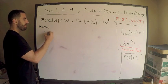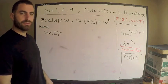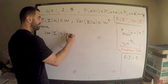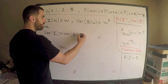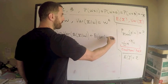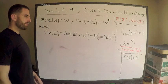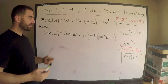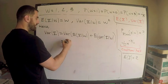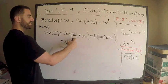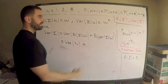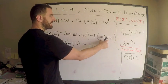So to find Var(Y), I'm going to use the law of total variance. The formula is: Var(Y) equals the variance of E[Y given W], plus the expectation of Var(Y given W). The first term is the variance of W — since E[Y|W] = W — and the second term is the expectation of W squared — since Var(Y|W) = W².